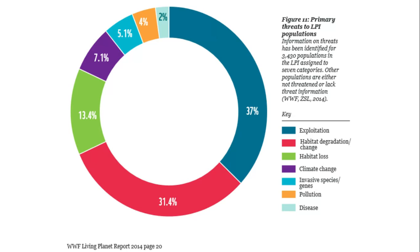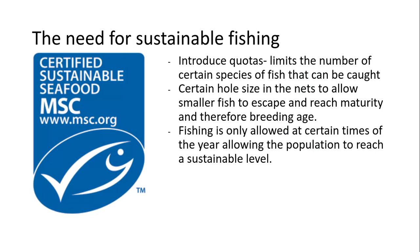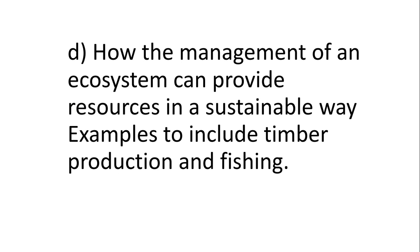It's really important that we sustainably fish in our oceans. The exploitation of fish is quite high, and there is a film called 'The End of the Line' which highlights the problems due to overfishing. Ways to contribute to sustainable fishing include introducing quotas, which limit the number of certain species of fish that can be caught at a given time. Nets have certain hole sizes to allow smaller fish to escape so they can reach maturity and breeding age, helping maintain a sustainable population level. Fishing is also only allowed at certain times of the year to help the population reach a sustainable level.